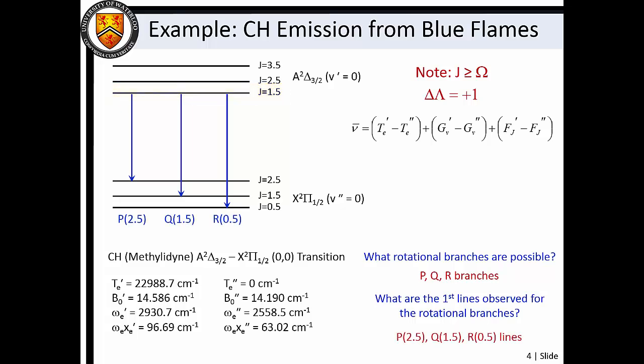Consequently, the first lines in the P, Q, and R rotational branches are P2.5, Q1.5, and R0.5.